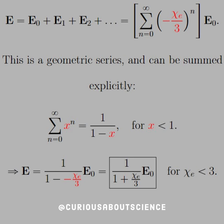Which then we can write as a summation from n equals 0 to infinity of negative chi E over 3 to the n times E0. Now what's special about this is this is a geometric series and can be summed explicitly using the formula sigma from n equals 0 to infinity of x to the n equals 1 over 1 minus x for x less than 1.